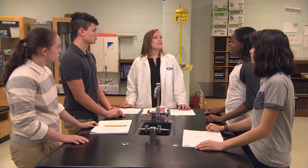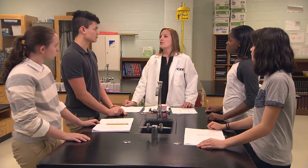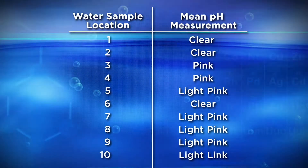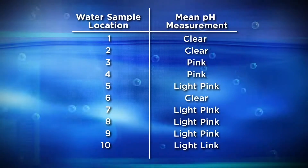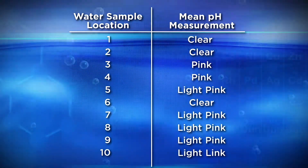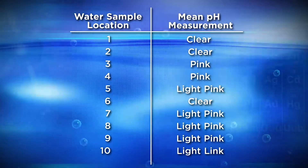Now let's think back and use the fourth science and engineering practice, analyzing and interpreting data. We'll use the chart to describe what this data tells us about what happened during the fish kill. One of your teams used phenolphthalein, an indicator that turns pink in the presence of a base. The water upstream from the fish kill — stations one and two — stayed clear. Then at the fish kill it turned pink in the presence of a base. But then the pink got lighter further downstream at station five and turned clear at station six. Maybe that was because a nearby creek was adding more water to the river at that spot. The other stations showed a light pink color indicating a base in the water from stations seven to ten.